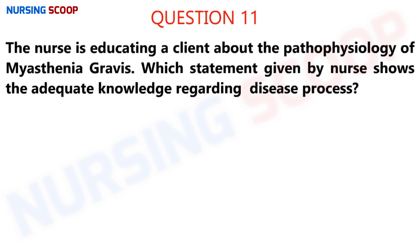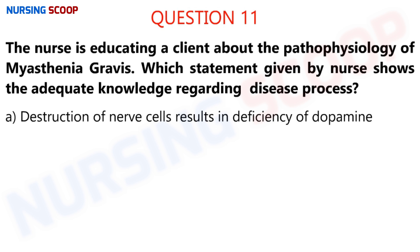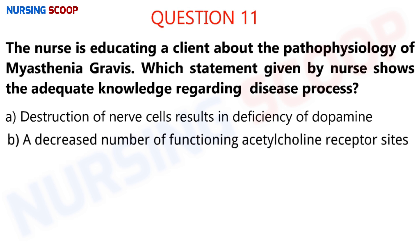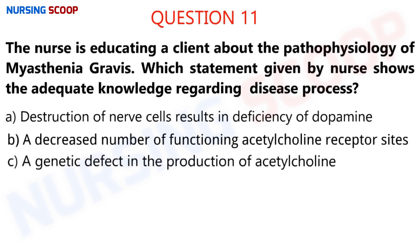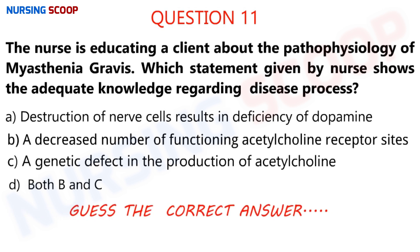Question number 11: A nurse is educating a client about the pathophysiology of myasthenia gravis. Which statement given by the nurse shows adequate knowledge regarding myasthenia gravis? Option A is destruction of nerve cells resulting in deficiency of dopamine. Option B is a decreased number of functioning acetylcholine receptor sites. Option C is genetic defect in production of acetylcholine. Option D is both B and C. In this question they are asking about the exact cause or etiological factor of myasthenia gravis.